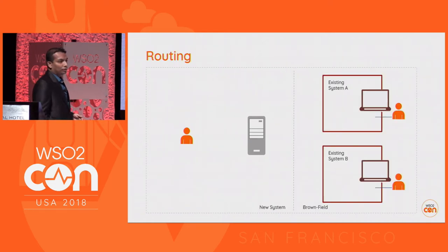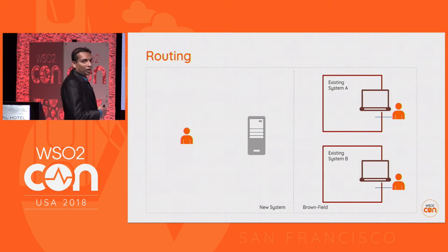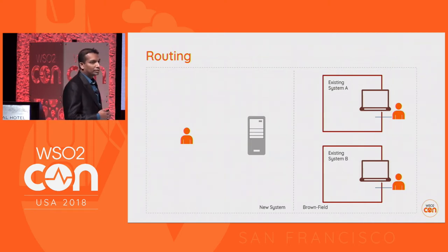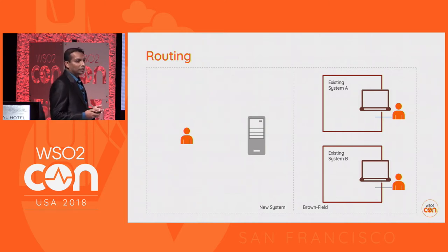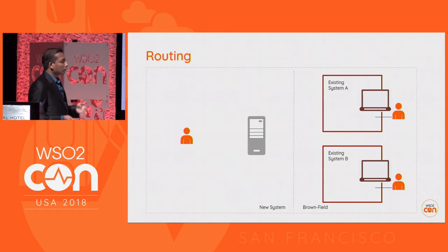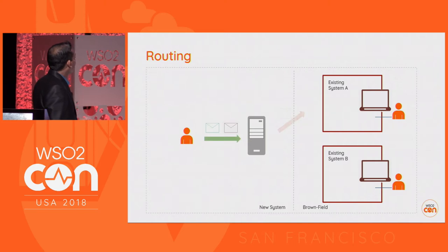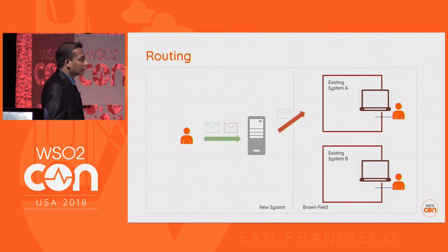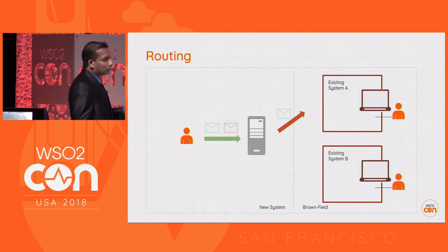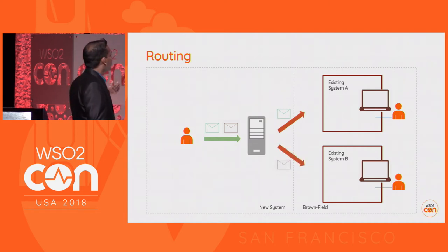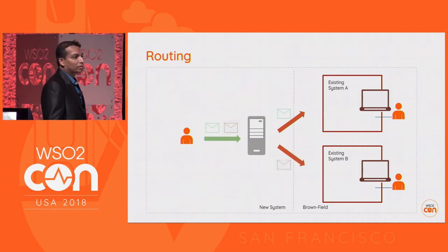Next we have routing. In the brownfield we have two different systems, system A and system B. Based on something in the message, we might need to route the message to one of these systems. We get two types of messages and based on the message content we route one to system A and the other to system B. This is routing.